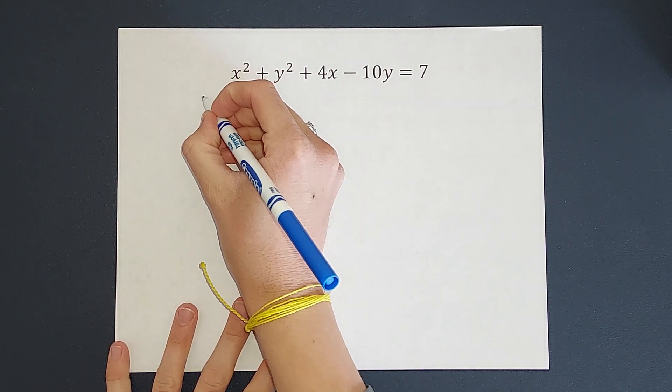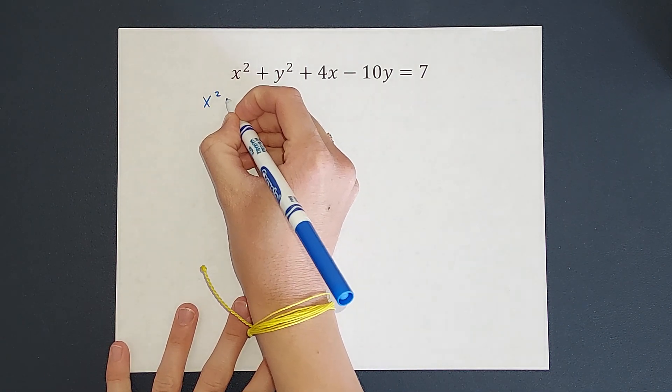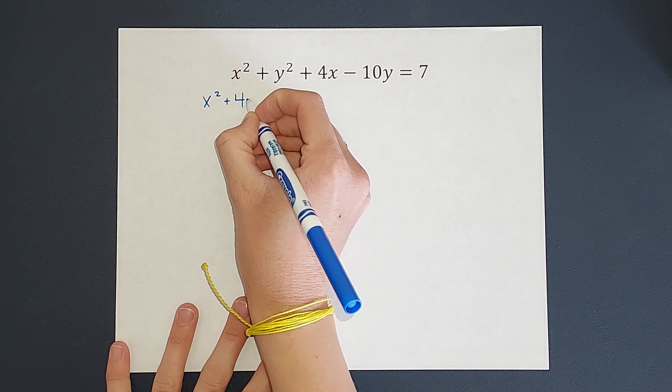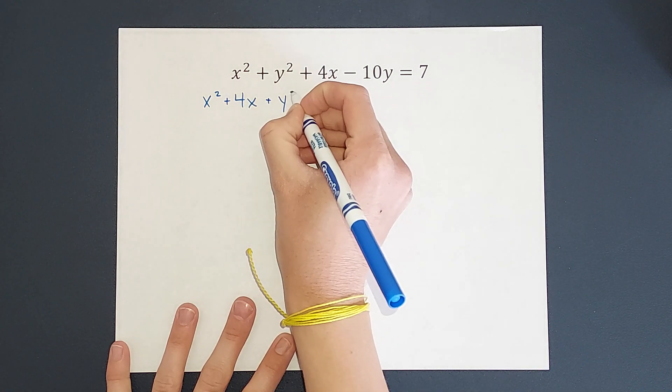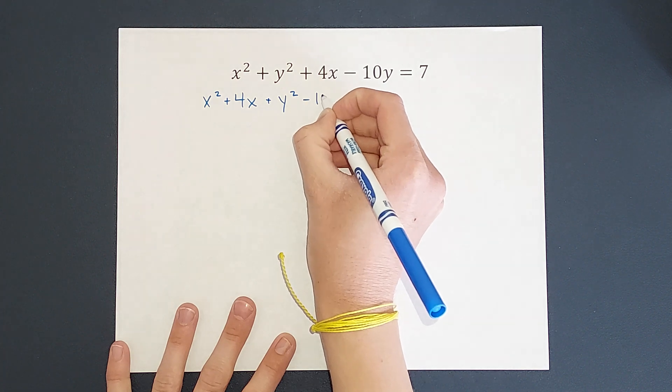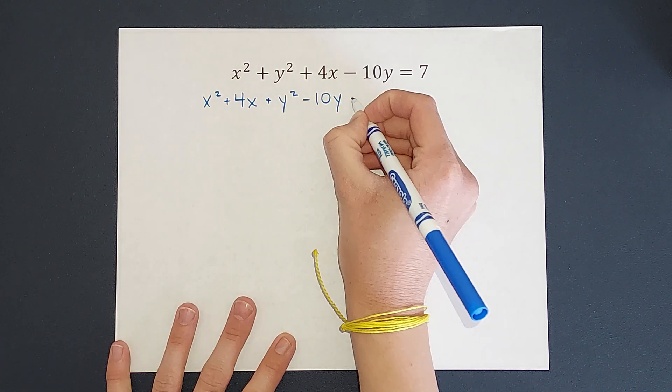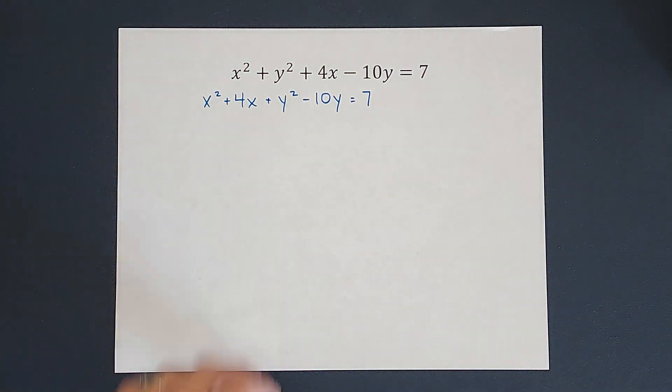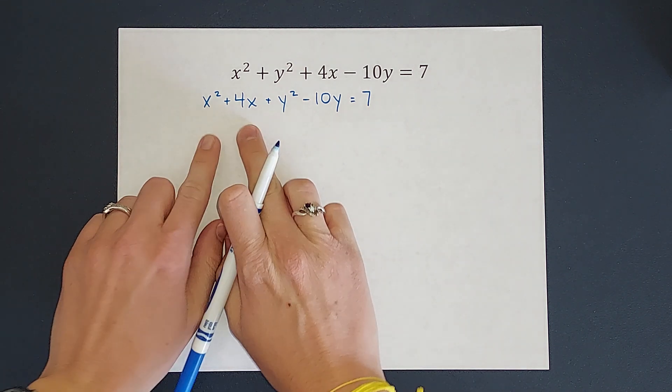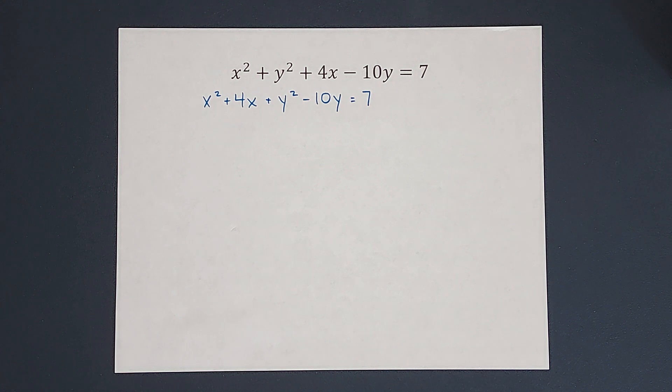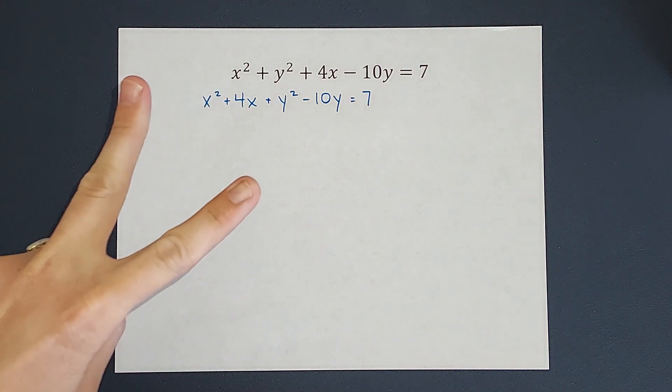So we're going to end up with x squared plus 4x plus y squared minus 10y equals 7. So I haven't changed anything, I just moved things around, right? So my x's are now together and my y's. Now what we're going to do is we're going to complete the square twice.